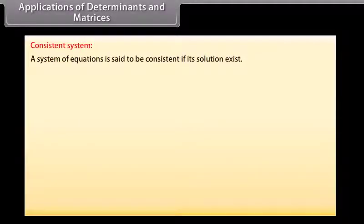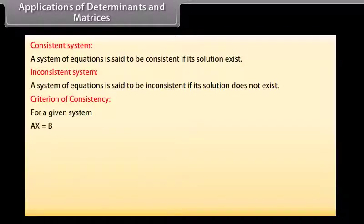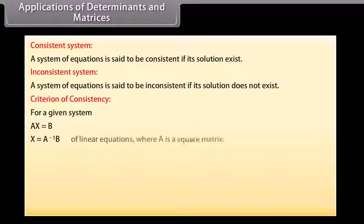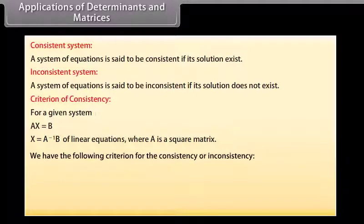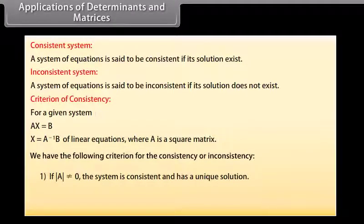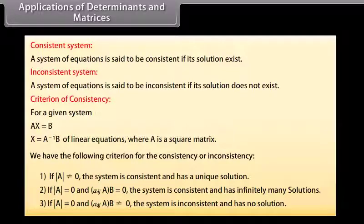Applications of determinants and matrices. Consistent system: A system of equations is said to be consistent if its solution exists. Inconsistent system: A system is inconsistent if its solution does not exist. Criterion of consistency for AX = B: If det(A) ≠ 0, the system is consistent with a unique solution. If det(A) = 0 and adj(A)·B = 0, the system is consistent with infinitely many solutions. If det(A) = 0 and adj(A)·B ≠ 0, the system is inconsistent with no solution.